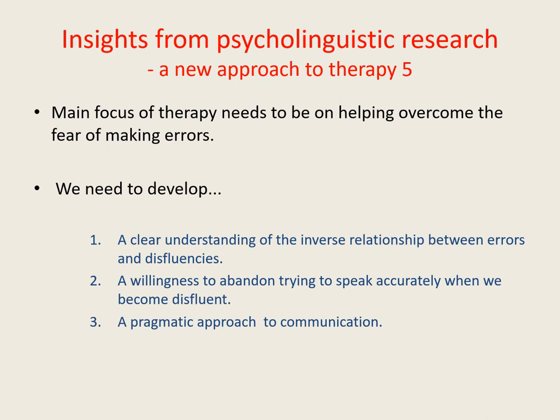To summarise: we produce blocks when the release threshold rises too high. In order to reduce the likelihood of blocking, we need to reduce the height of the release threshold. In order to do this, we need to try less hard to speak problem words clearly and accurately. In order to try less hard, we need to give a higher priority to simply maintaining the forward flow of speech. And for all of this to be possible, we need first a clear understanding of the inverse relationship between errors and disfluencies.